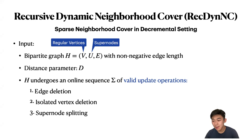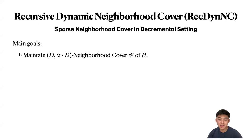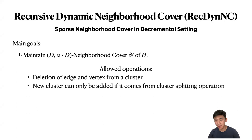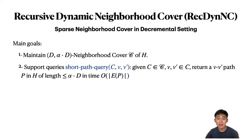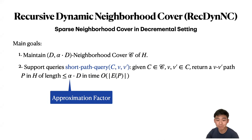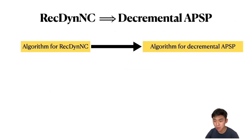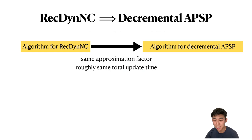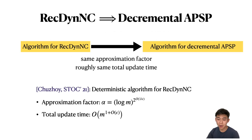Supernode splitting can be thought of as adding a new vertex and connecting it to some neighbors of a previous vertex. Our main goals are to maintain an alpha*d neighborhood cover C of H, where the only allowed operations on clusters are deletions of edges and vertices, and new clusters can only be added via cluster splitting. Additionally, the algorithm must support shortest path queries: given a cluster C and two vertices in it, return a path connecting them of short length. This alpha is the approximation factor. An algorithm for Recursive Dynamic NC immediately implies an algorithm for decremental APSP with the same approximation factor and roughly the same total update time — that is exactly what Chuzhoy did.